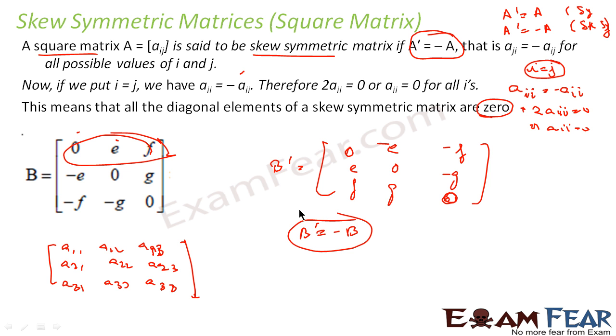If you want a shortcut to tell whether a matrix is skew symmetric or not: first thing to observe is all the diagonal elements are 0. If it is 0, assume it is a mirror. Now instead of equal reflection, it is a negative reflection. e is minus e.